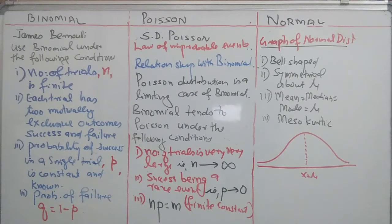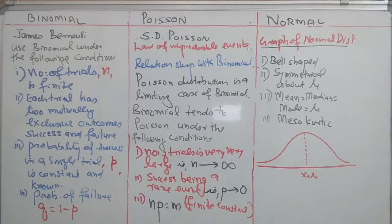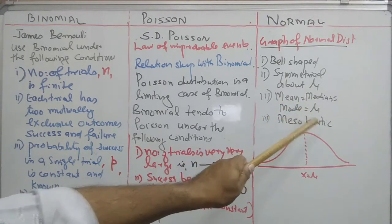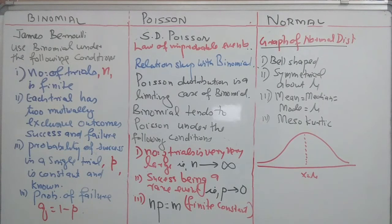For normal distribution, we use the properties of the graph of normal distribution, called the normal curve. It is a bell-shaped, symmetrical curve about x = mu. For normal distribution, mean equals median equals mode equals mu. It is a mesokurtic curve. For evaluating probabilities, we use the normal curve rather than the normal probability function.